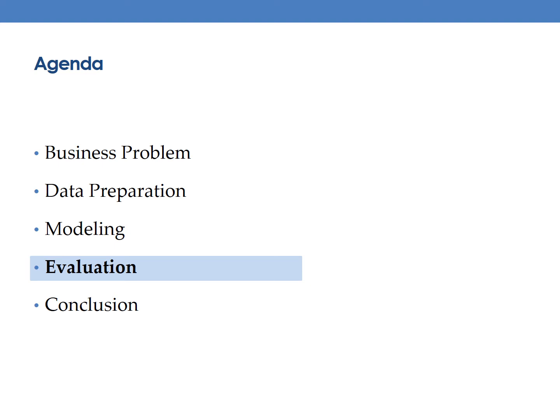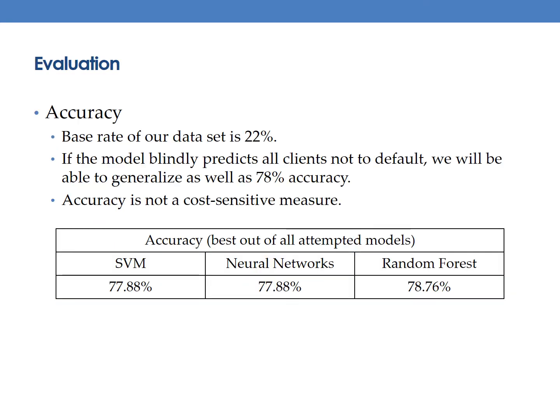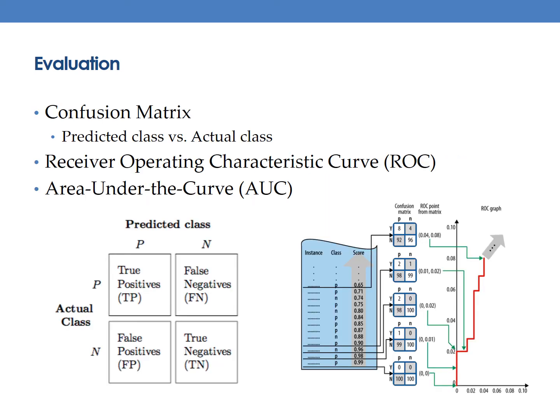We then start to evaluate after running all the models. As you can see from the table, almost all of our models get around 78% accuracy. However, since the base rate of our data is 22%, it means that if the model blindly predicts all clients not to default, we will still be able to generalize as well as 78% accuracy. In this case, 78% accuracy seems not useful to make meaningful prediction. Besides, accuracy measure only tells the probability of getting an error, and it is indifferent among errors that may yield different levels of cost in reality.